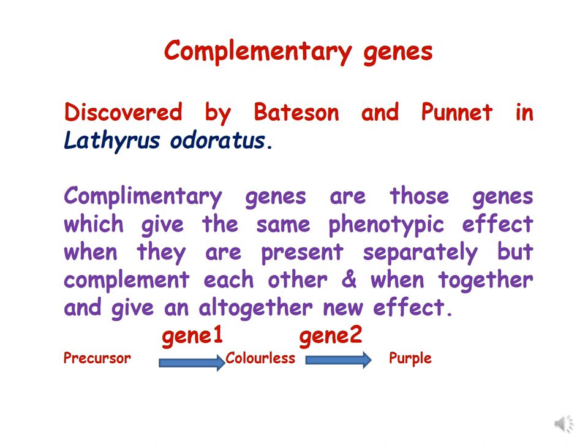This gives the phenotypic ratio of 9 purple to 7 white. Complementary genes are defined as genes which give the same phenotypic effect when present separately, but complement each other when together to produce an altogether new effect. This happens because gene one makes an enzyme converting a precursor into a colorless product, and gene two converts that colorless intermediate into purple color.